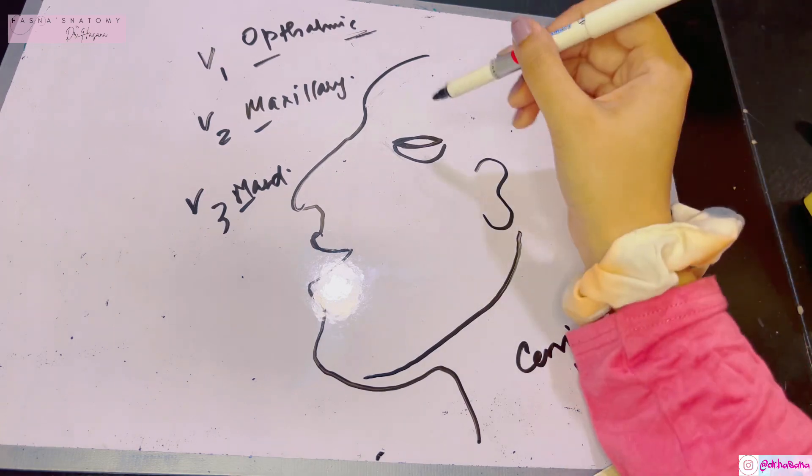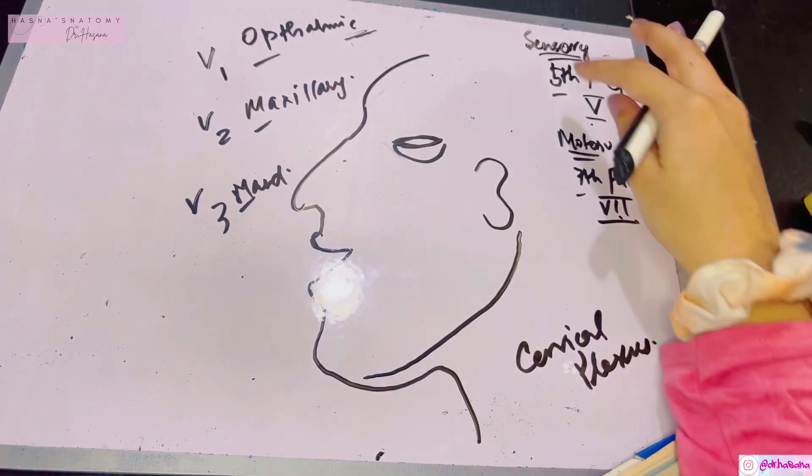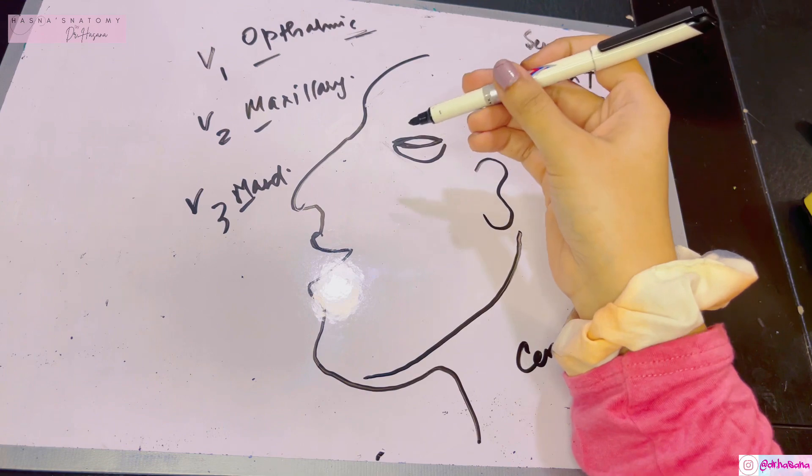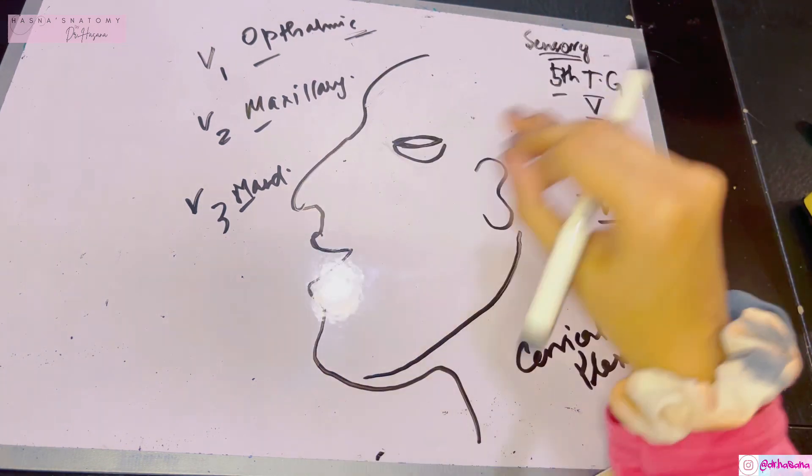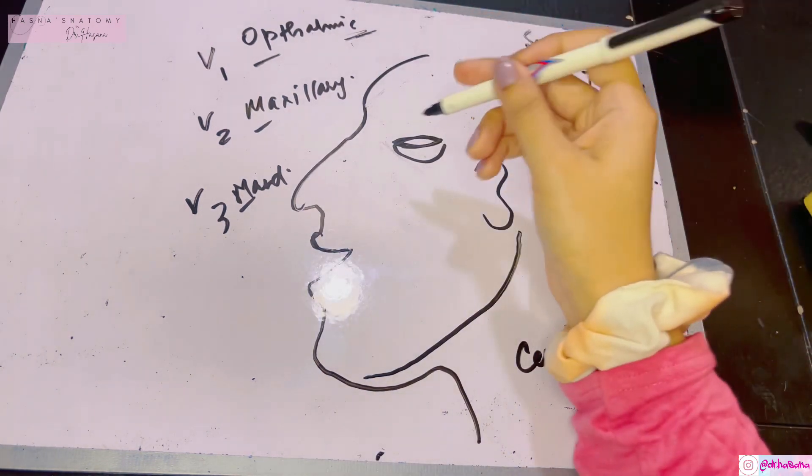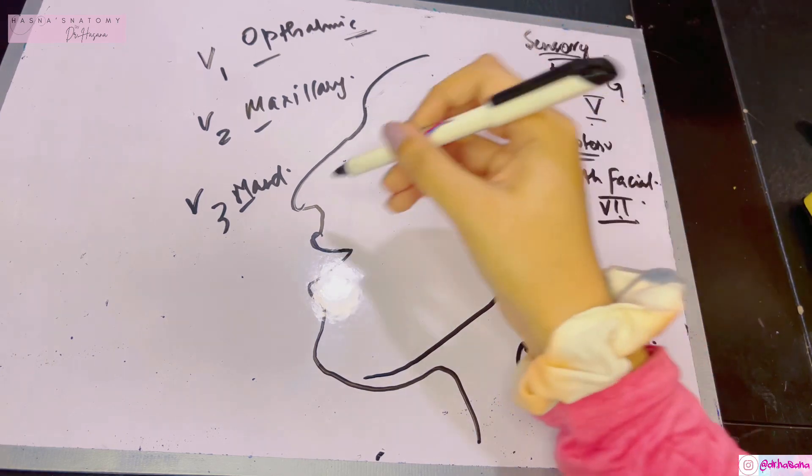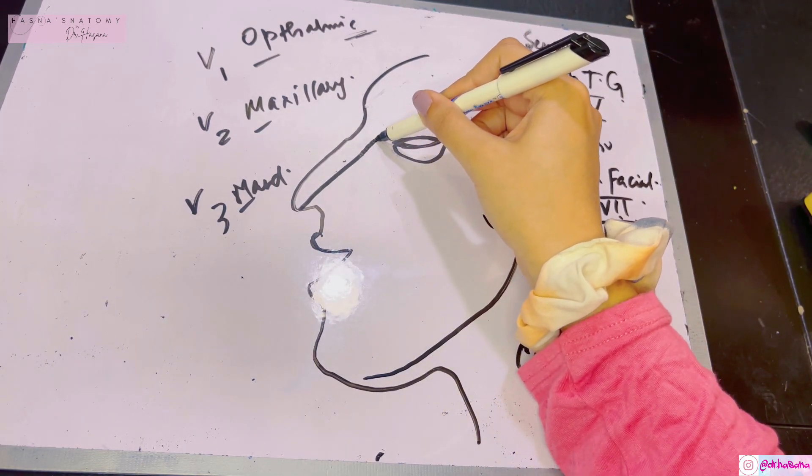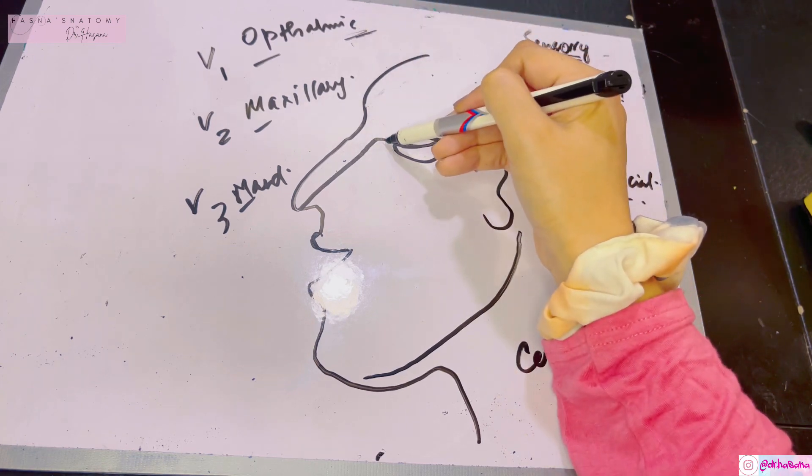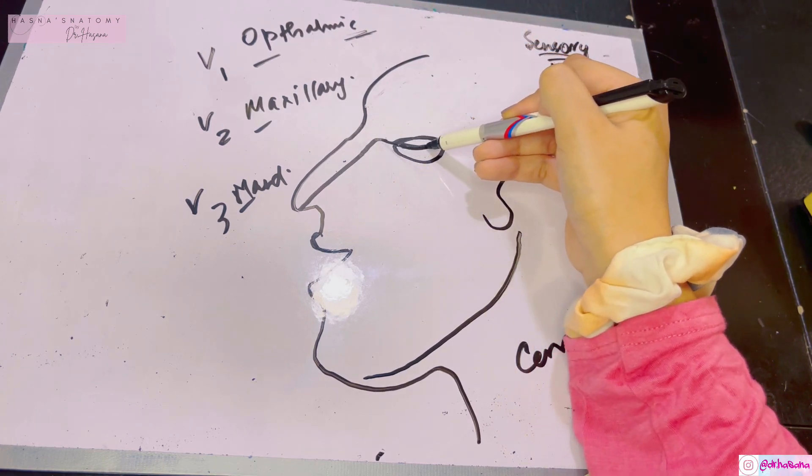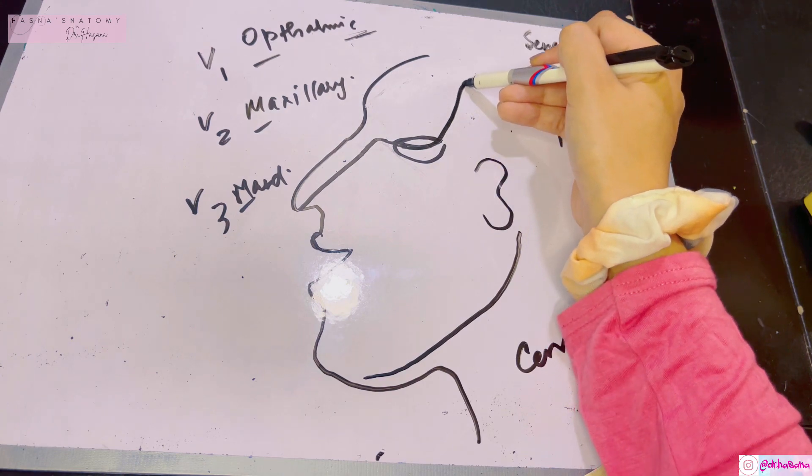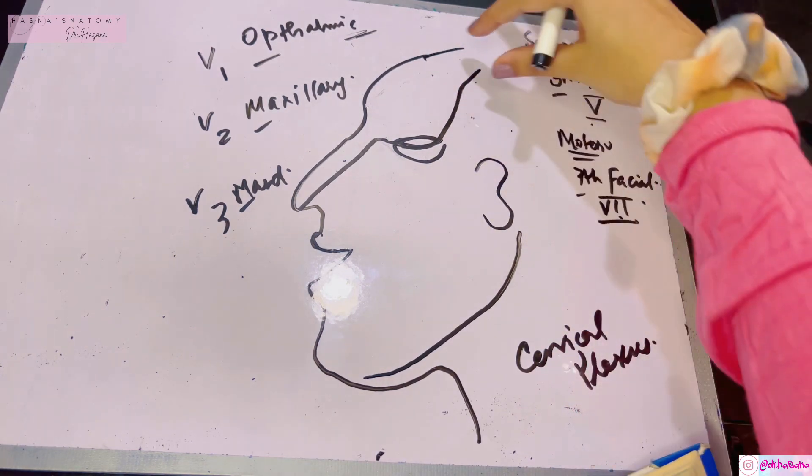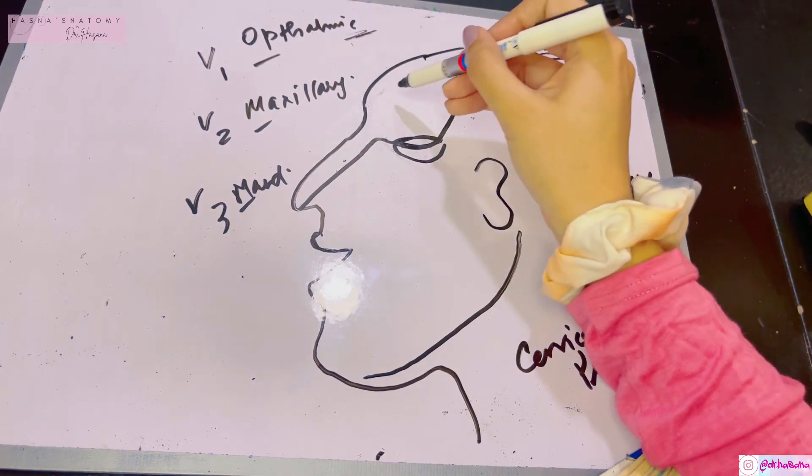Now we're going to draw the face and the sensory supply. Draw the face from the side. First, draw a racket coming from the nose. When this racket reaches the upper eyelid—I told you this is the lower limit of the ophthalmic nerve—go to that upper eyelid and complete your racket.